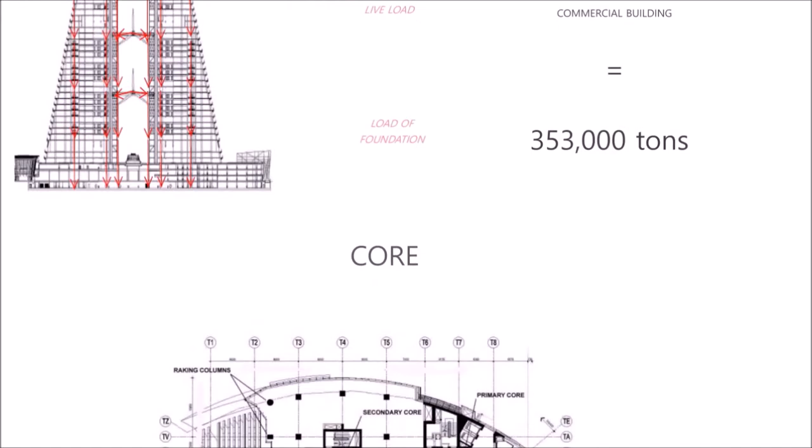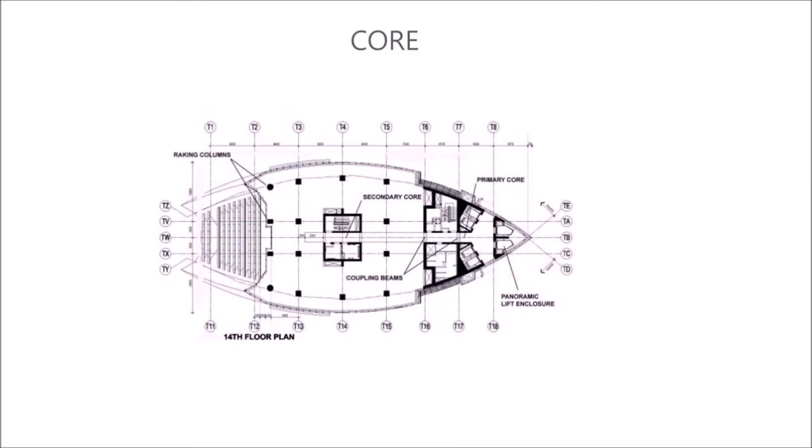The primary structure comprises main and secondary reinforced concrete cores. The main core housing lifts, escape stairs, plant rooms and toilets, and the secondary core housing an escape stair and electrical telecoms rooms.